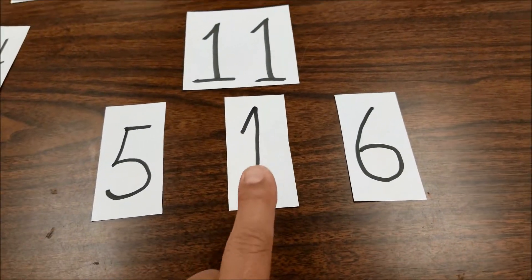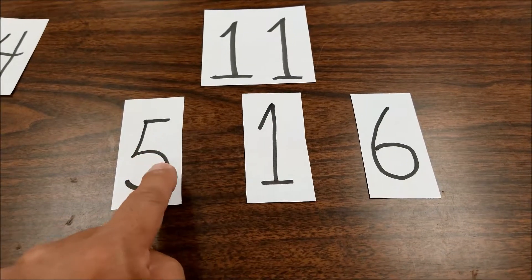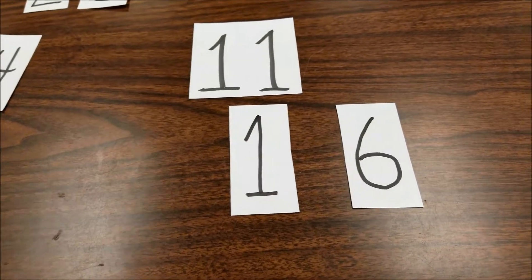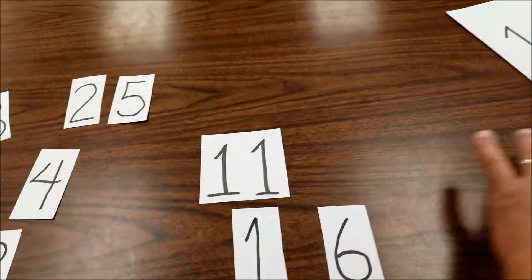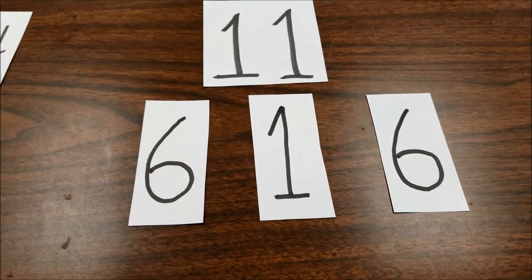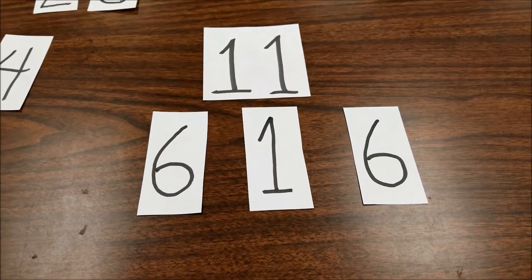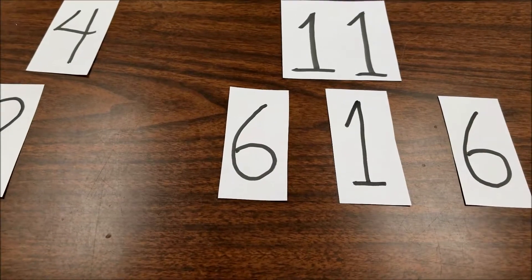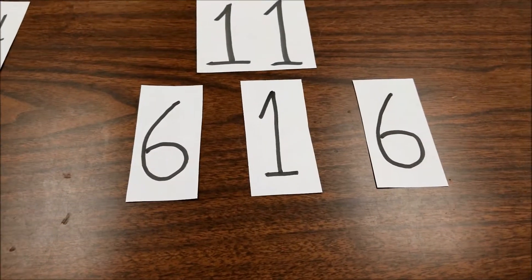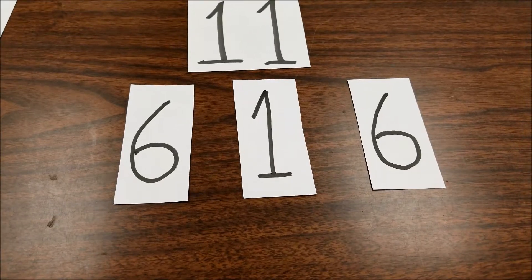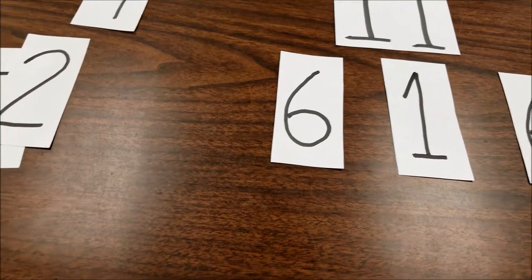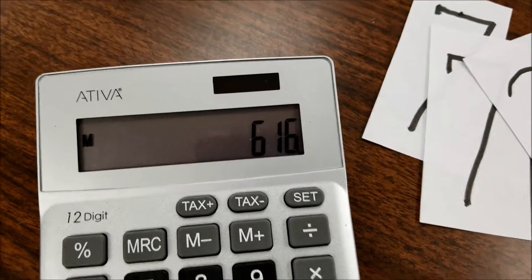There's the 1 in the 1's column from the 11. I'll add 1 over here to this column, which would be a 6. The answer is 616. So let's check that. 11 times 56, and there is the 616.